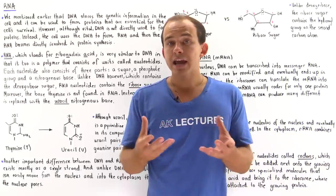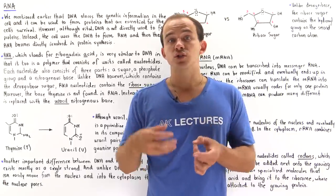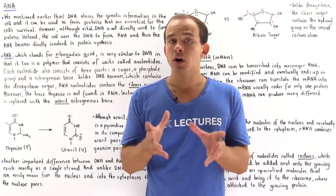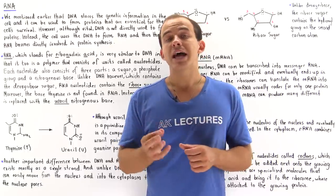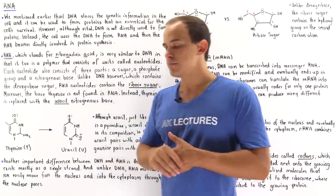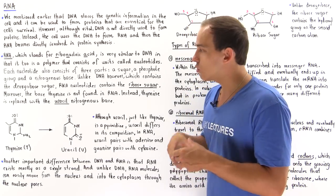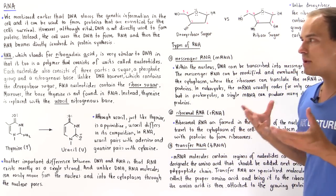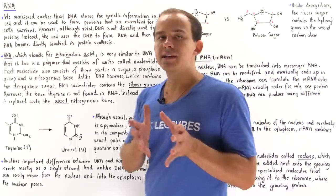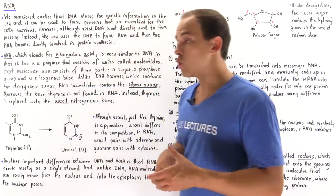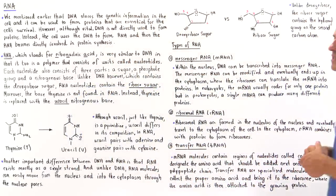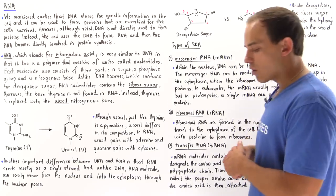Instead, our DNA must first be transcribed into a molecule known as RNA, and it's the RNA that is directly involved in the synthesis of our protein molecules. In this lecture, we're going to differentiate between RNA and DNA molecules and discuss the different types of RNA molecules that exist within our cell.